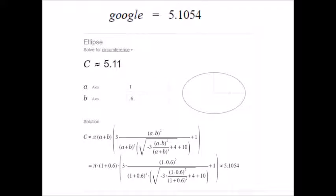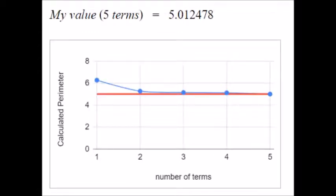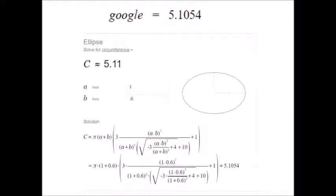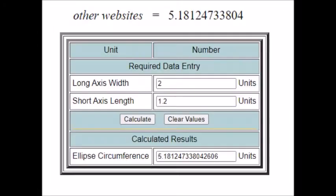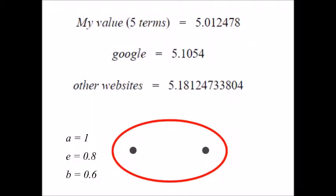Their online ellipse perimeter calculator, because of course they have one of those, gives this, which is scandalous. It's bigger than my value, and my value is necessarily an overestimate. Other websites give other values, which is alarming, especially because of all those digits. I mean, what good are all those extra digits if these three results don't even agree if the answer is closer to 5.0, 5.1, or 5.2?